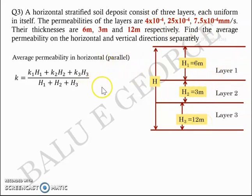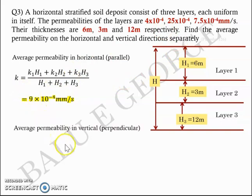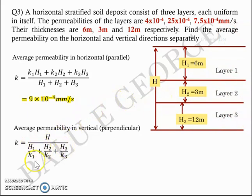Please work this out on your own to verify you get a similar answer. For the vertical direction (perpendicular to the plane of stratification), the equation is: K = H / (H1/K1 + H2/K2 + H3/K3). Again, try to work this out on your own and check that you get approximately 6.5 × 10⁻⁴ mm/s.